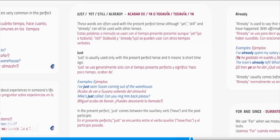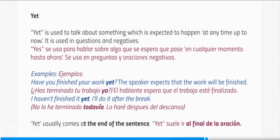In the present perfect, just comes between the auxiliary verb have and the past participle. Yet is used to talk about something which is expected to happen — at any time up to now. It is used in questions and negatives. Examples: have you finished your work yet? — the speaker expects that the work will be finished. I haven't finished it yet; I'll do it after the break. Yet usually comes at the end of the sentence.